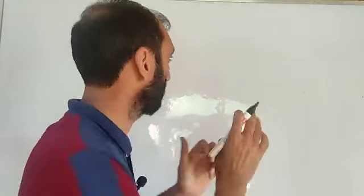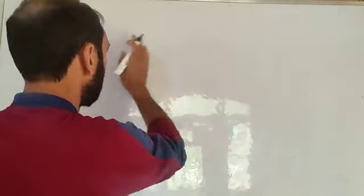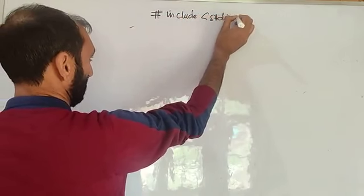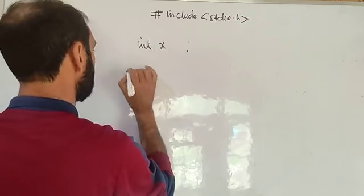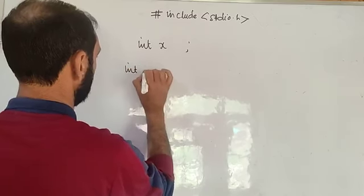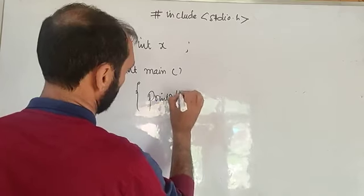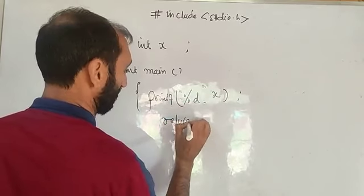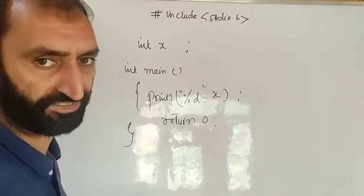Today we will discuss two questions. First, I will write a small program and we will see what the output of that program would be. I will include the header file: `#include <stdio.h>`, declare `int x` globally, then write `int main()` with `printf("%d", x)` and `return 0;`.